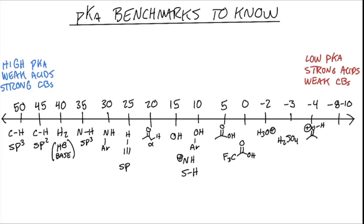And then coming in at negative 8 to 10, really, really strong acids are some of our favorite inorganic acids like HCl, HBr, or HI. Those are negative 8, negative 9, and negative 10, respectively.